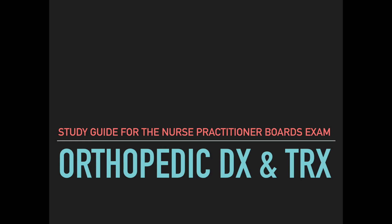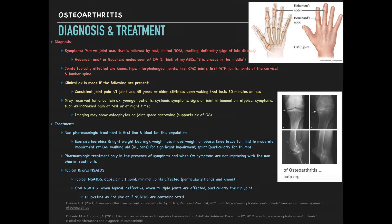Now on to orthopedics. The first diagnosis we're going to talk about is osteoarthritis. Osteoarthritis is one of those conditions that a lot of times we can diagnose simply based on clinical presentation. Symptoms usually include pain with the joints they're using, typically relieved by rest. They may experience limited range of motion, swelling, and if they're experiencing any kind of deformity, that is a late sign of the disease. With osteoarthritis, we'll also see what we remember as the Heberden and Bouchard nodes on the hands — I have a picture up in the upper corner.